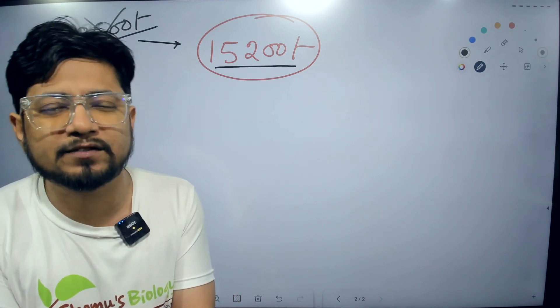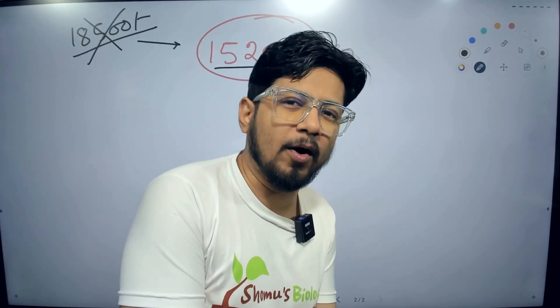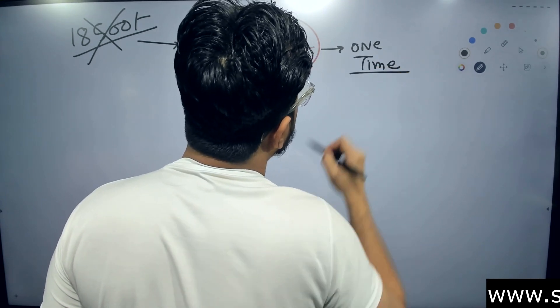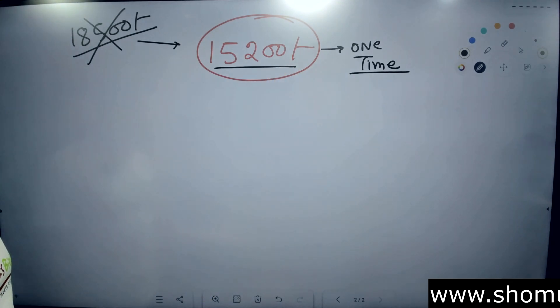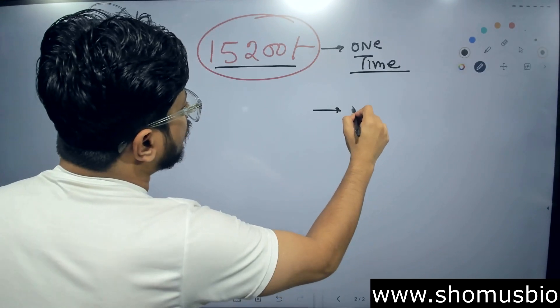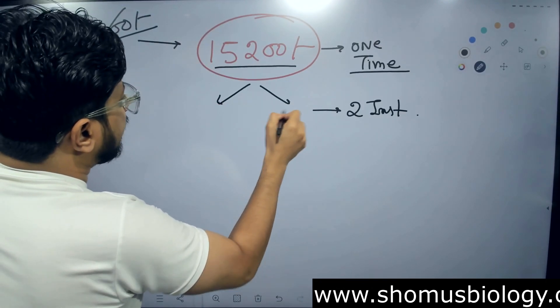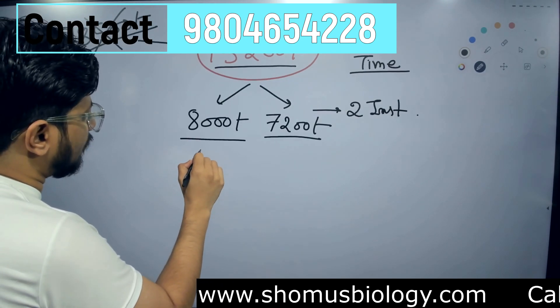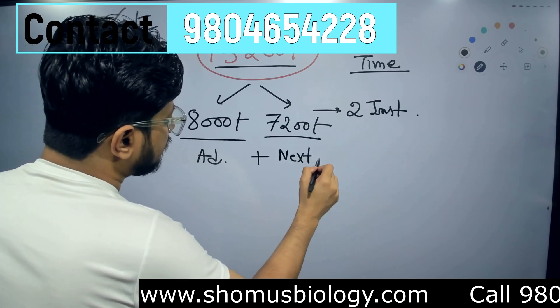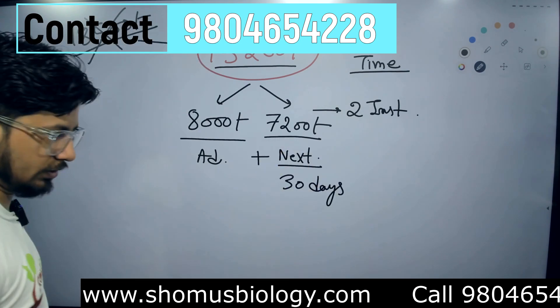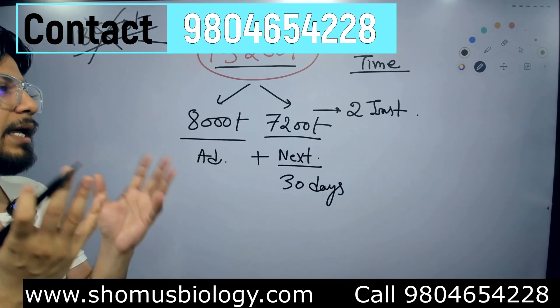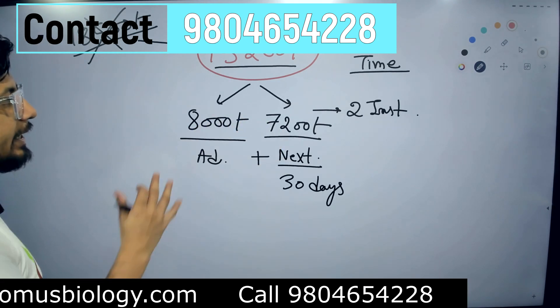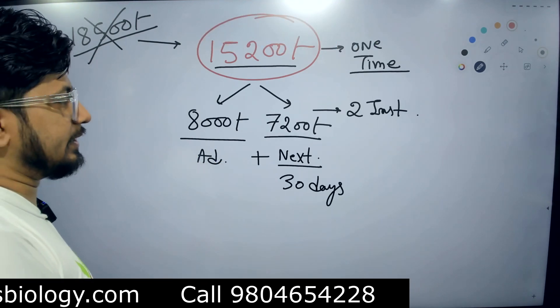So please don't request us for monthly installments, we cannot do that. We can offer you either one-time payment - make a one-time payment of fifteen thousand two hundred and get all the facilities. Or we can offer you two installments, part payments - we can break it down to eight thousand rupees and seven thousand two hundred rupees. Eight thousand rupees at the time of admission and in the very next month, in thirty days, you need to pay the rest seven thousand two hundred rupees. That is the maximum installment that we can offer - eight thousand during admission, seven thousand two hundred after 30 days.